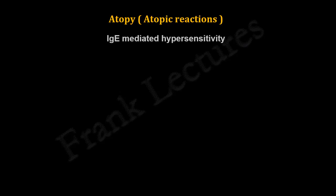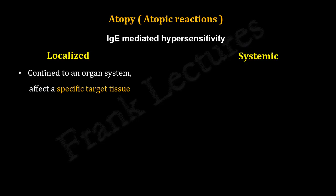Another term for type 1 hypersensitivity reactions is atopy or atopic reactions. Atopy refers to IgE-mediated hypersensitivity. The patients with such reactions are known as atopic patients. Type 1 hypersensitivity reactions are either localized or systemic. Localized atopy means the allergic symptoms depend on the location of the affected site, and it is generally confined to a specific target tissue or organ.